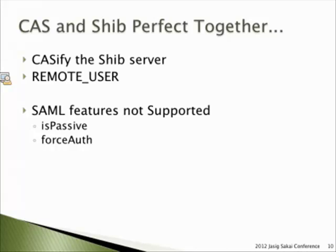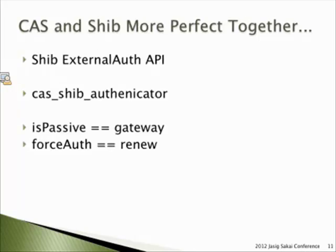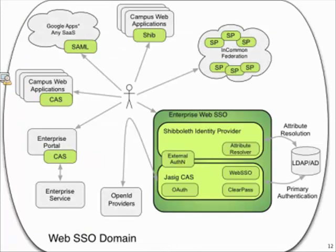CAS has analogous features: renew equals true, which is forced authentication, and gateway, which is is-passive. What we needed was a way to bridge more of the SAML features over to the CAS server. This is what we've recently done, facilitated by a SHIB API called external authentication. This is a more sophisticated integration scenario than simply CASifying the SHIB server, and the component is called CAS-SHIB authenticator, developed by UNICON, mostly by Dima.